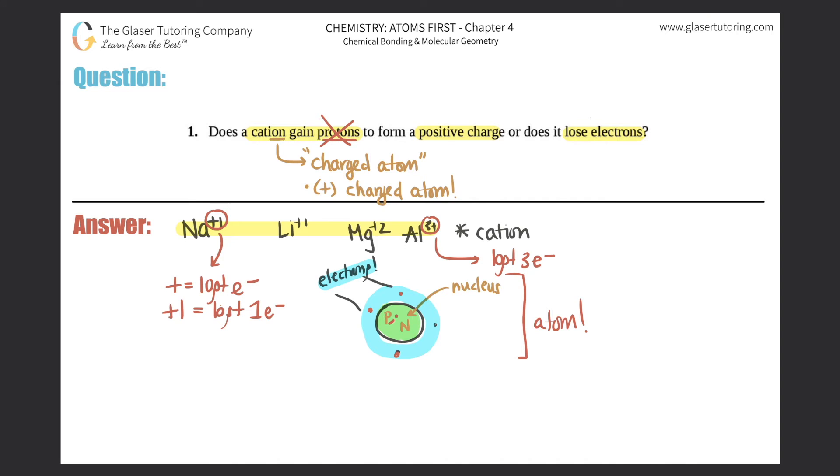You always will either lose electrons or gain electrons. So to answer this question, does a cation gain protons to form a positive charge or does it lose electrons? It loses electrons and that's that.